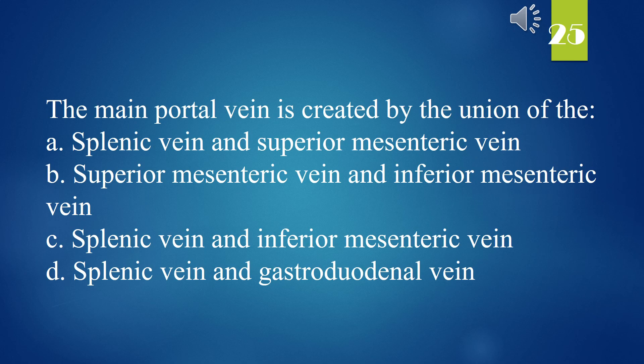The main portal vein is created by the union of: A. Splenic vein and superior mesenteric vein. B. Superior mesenteric vein and inferior mesenteric vein. C. Splenic vein and inferior mesenteric vein. D. Splenic vein and gastroduodenal vein. The answer is A. Splenic vein and superior mesenteric vein.